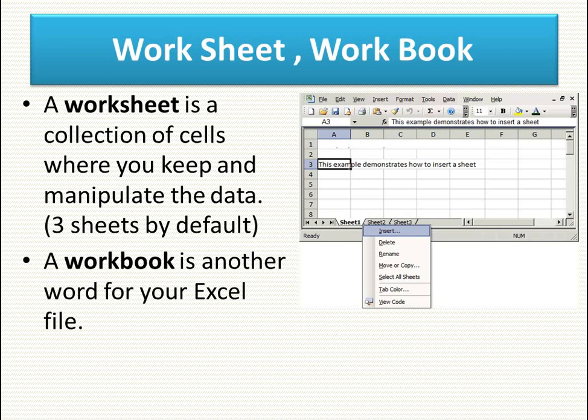Now we will see what is a worksheet and what is a workbook. Like a book has a number of sheets bound together, a worksheet is a collection of cells where you keep and manipulate data. There are three worksheets by default, and you can add any number as you wish. A workbook is just another name for your Excel file. The individual sheets inside it are called worksheets, visible as tabs — Sheet1, Sheet2, Sheet3 — at the bottom.